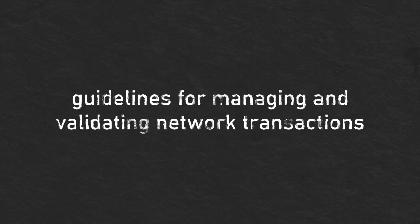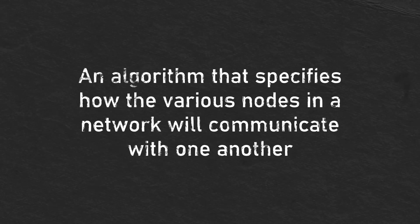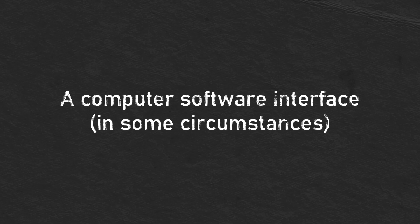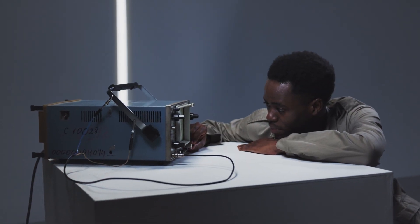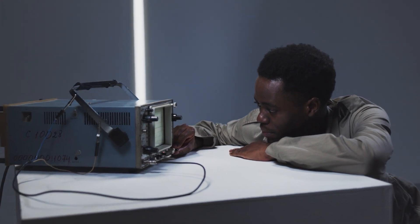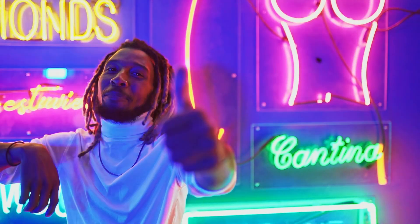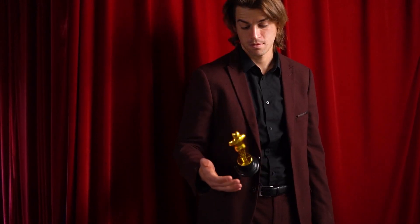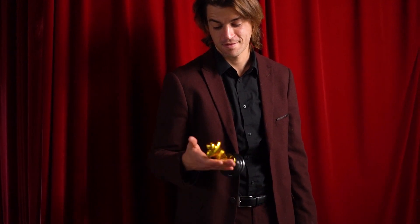The rules that make up blockchain protocols include: guidelines for managing and validating network transactions; an algorithm that specifies how the various nodes in a network will communicate with one another; and a computer software interface in some circumstances. A soft fork is a tweak to the software protocol that renders previously valid transaction blocks invalid, and is considered backward compatible because old nodes will identify the new blocks on the blockchain as valid. Soft forks are the most popular way to upgrade a Bitcoin blockchain since they pose a lower risk of interrupting the network.